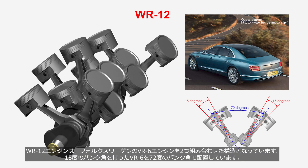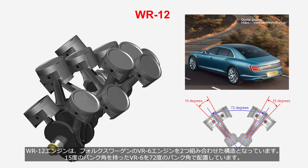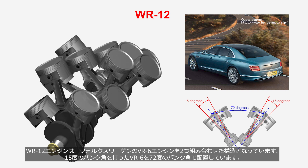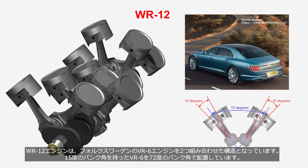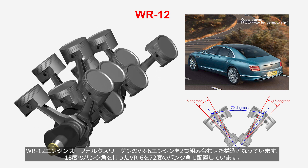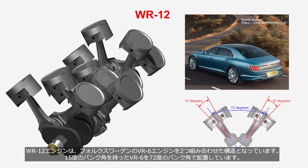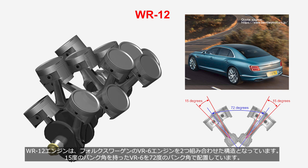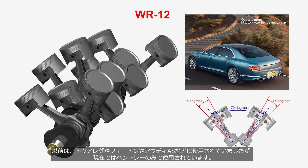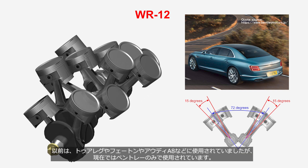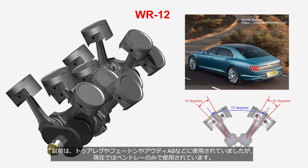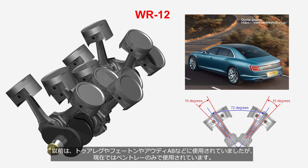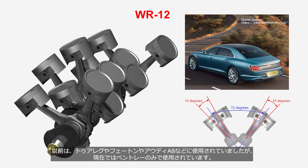The Volkswagen WR-12 engine structure combines two VR-6 engines. Two cylinder groups with a bank angle of 15 degrees are combined at a 72-degree bank angle. Previously it was used in vehicles such as the Touareg, Phaeton, and Audi A8, but currently it is exclusively used in Bentleys.